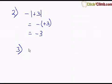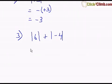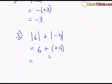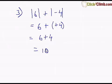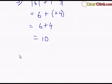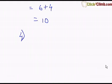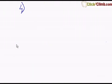Next, we work with two numbers and absolute values: absolute value of 6 plus the absolute value of negative 4. The first thing is to solve the absolute values. Absolute value of 6 is 6, plus the absolute value of negative 4 is positive 4. Positive and positive make a positive, so this is 6 plus 4, giving the answer as positive 10.